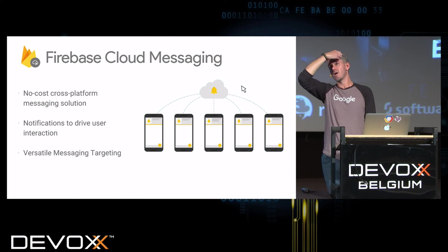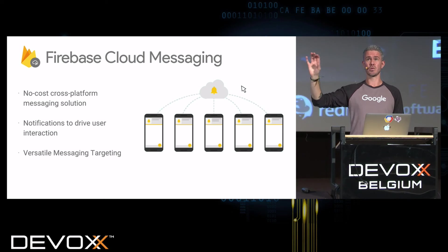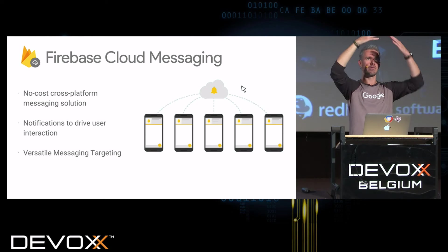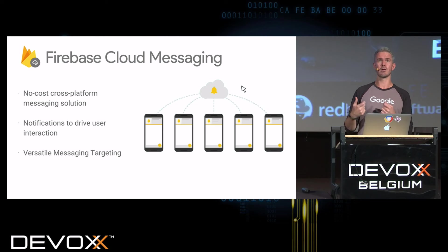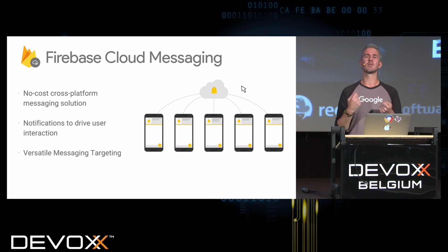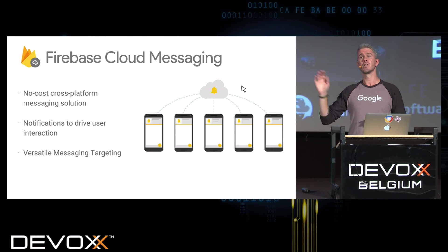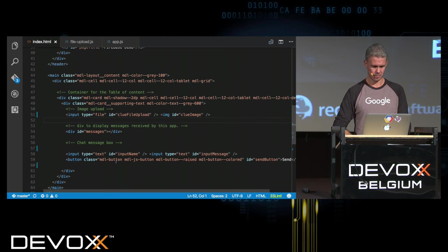Cloud Messaging also works on web to get offline messages. If the user is in your app there are many ways to communicate with it, but if they close your page or minimize it and go to another window, your options become a lot more restricted. Cloud Messaging will let you send those events to a service worker running in the background to take those messages and do something with them.